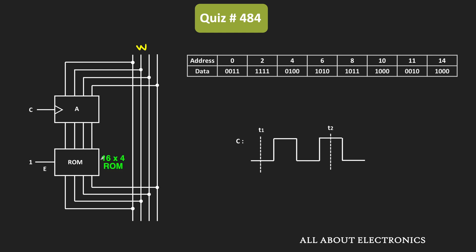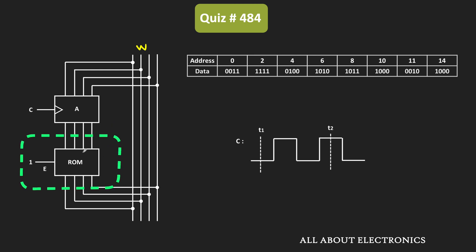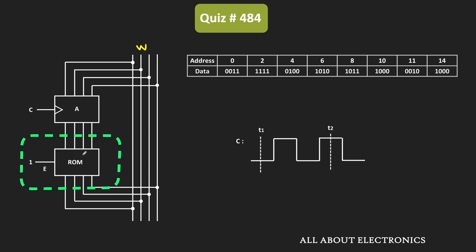This ROM is a 16x4 ROM. The output of the ROM is connected back to the data bus. At the rising clock edge, whatever input is available on the data bus will get loaded into this shift register. As soon as it gets loaded, it will be available as an input to this ROM, where it will act as an address input.